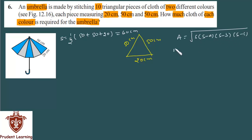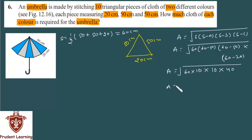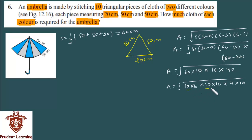Substituting s equals 60: area equals root of 60 into 60 minus 50, into 60 minus 50, into 60 minus 20. That gives us root of 60 into 10 into 10 into 40.